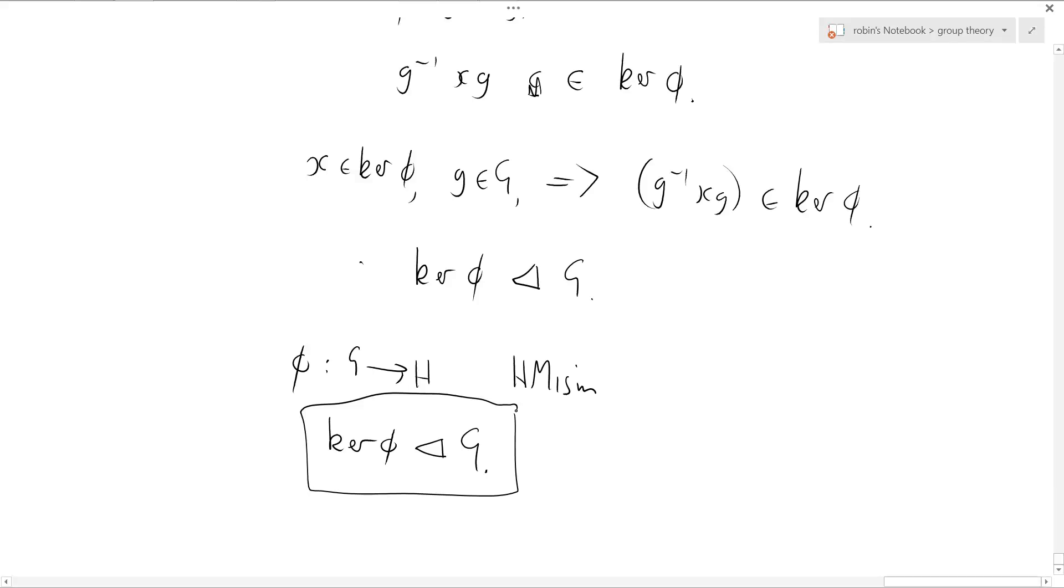And I'm not really asserting anything about this map phi, except that it's a homomorphism. We're seeing how powerful the group axioms are. And we're getting this rather splendid, very strong result out of very weak assumptions. I'm going to stop right there.